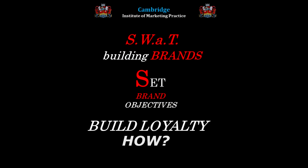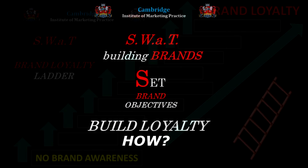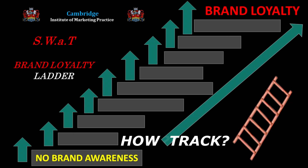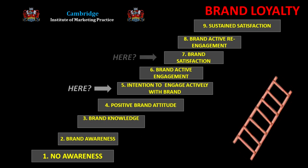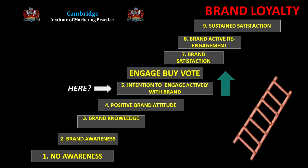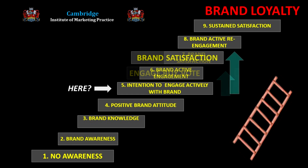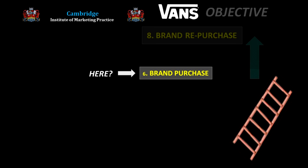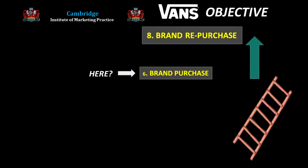Back to tracking and objectives. How do we set loyalty objectives, and how do we track the progress of targets through the loyalty space and up the ladder towards absolute brand loyalty? If you have one target, that's easy — where is he or she on the ladder at a given point in time? Set the objective of climbing a rung or two by when, and check back to monitor progress. So if I'm the Vans brand manager, this old dude is my sole consumer, and he's on rung six — he's just bought the first pair of Vans trainers — I might set the objective of taking him to rung eight, repeat purchase, within six months.